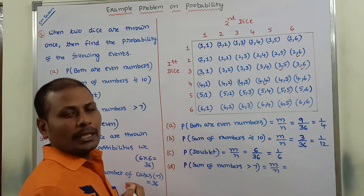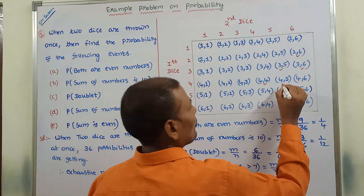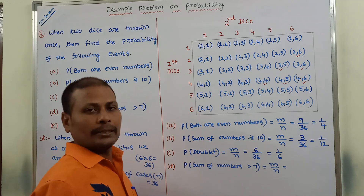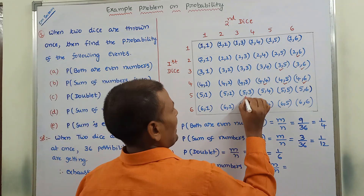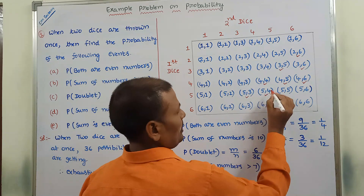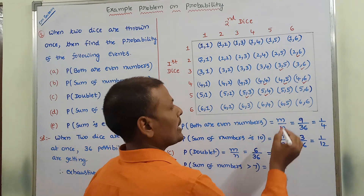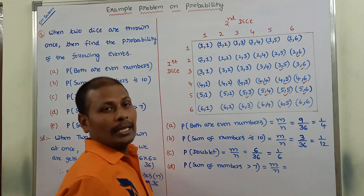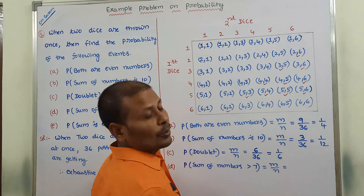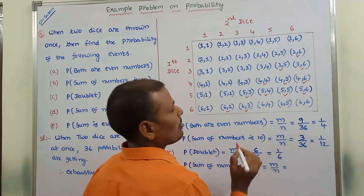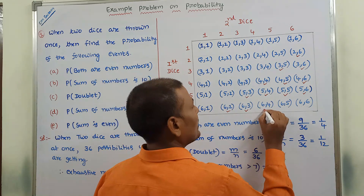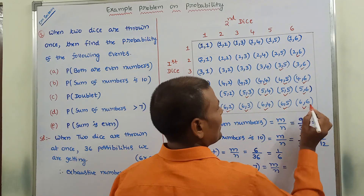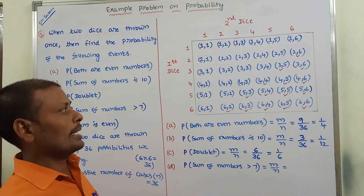Continuing the favorable cases with sum greater than 7: 4 comma 4 (8), 4 comma 5 (9), 4 comma 6 (10), 5 comma 3 (8), 5 comma 4 (9), 5 comma 5 (10), 5 comma 6 (11), 6 comma 2 (8), 6 comma 3 (9), 6 comma 4 (10), 6 comma 5 (11), 6 comma 6 (12). All these sums are greater than 7.